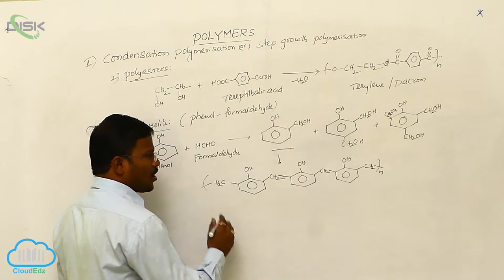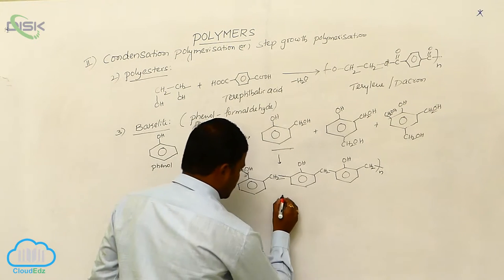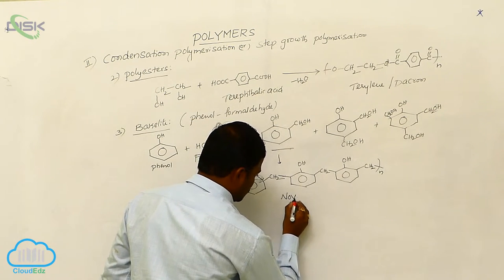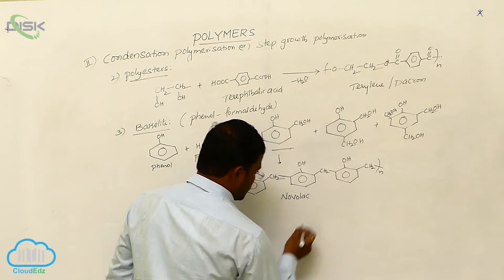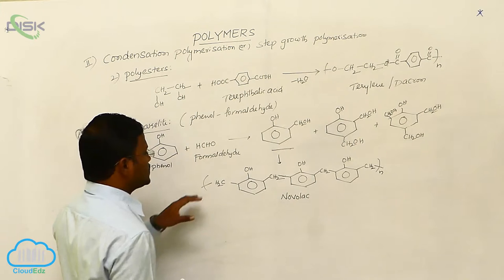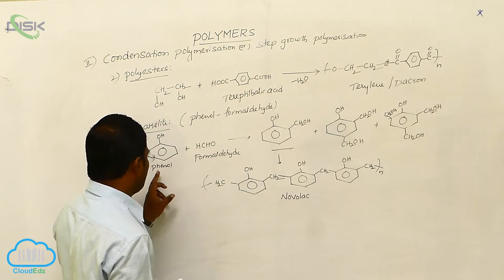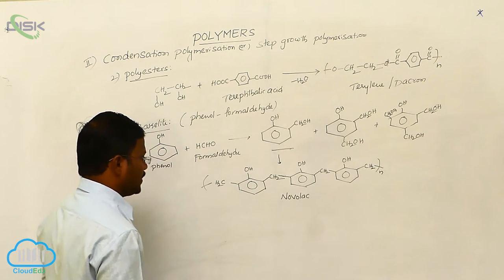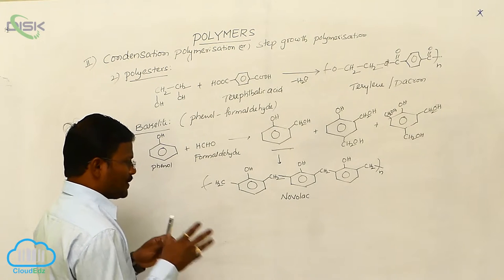The resulting long chain is called NOVOLAC. It is a simple polymer resulting from phenol and formaldehyde. In the next step, under specific conditions,